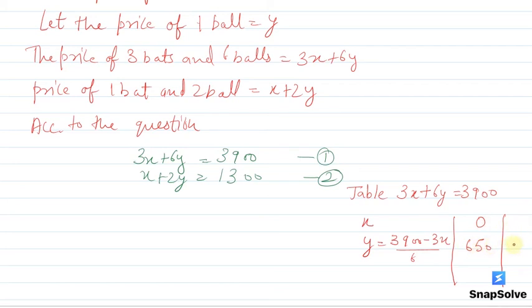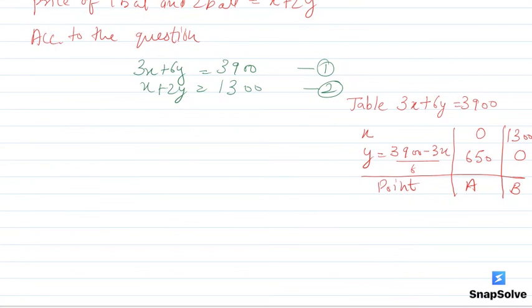And if y is 0, our value will be 1300. So we have the coordinates. We will label the points so when we represent it in the graph it will be easier. This is our point A and point B.